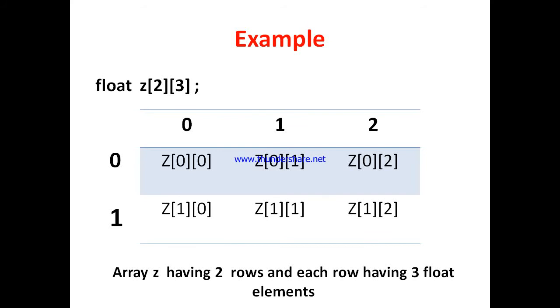Now second example. Example is float z[3][2]. Here 2 rows and 3 columns. 0, 1, 2. In the same way now here [0][0], [0][1], [0][2], [1][0], [1][1], [1][2].